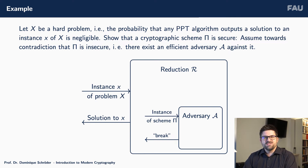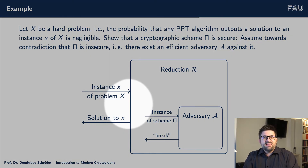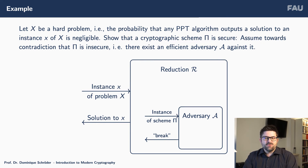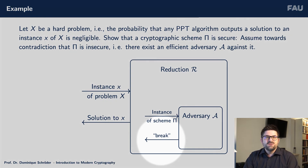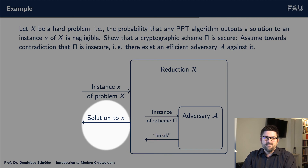We don't need to understand how this algorithm actually works — it's given to us in a black box, like a box where you can interact with it. The next step is that we create a reduction. The reduction is nothing else but a translation from our hard problems to this adversary. We create something like a translator that takes an input instance of the hard problem and essentially simulates the entire environment for the adversary. For example, one of the building blocks was an encryption scheme, and we will use the adversary to break this encryption scheme, making sure that the interfaces match and using whatever the adversary gives us to break the underlying hard assumption. At this point this might be very abstract, and we will see a very concrete example that should help you follow each step.